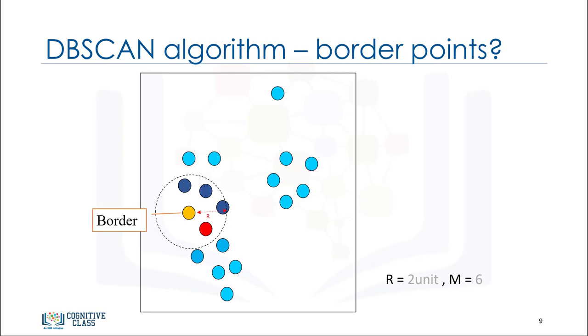What is a border point? A data point is a border point if its neighborhood contains less than M data points, or it is reachable from some core point. Here, reachability means it is within our distance from a core point. It means that even though the yellow point is within the two centimeter neighborhood of the red point, it is not by itself a core point, because it does not have at least six points in its neighborhood.